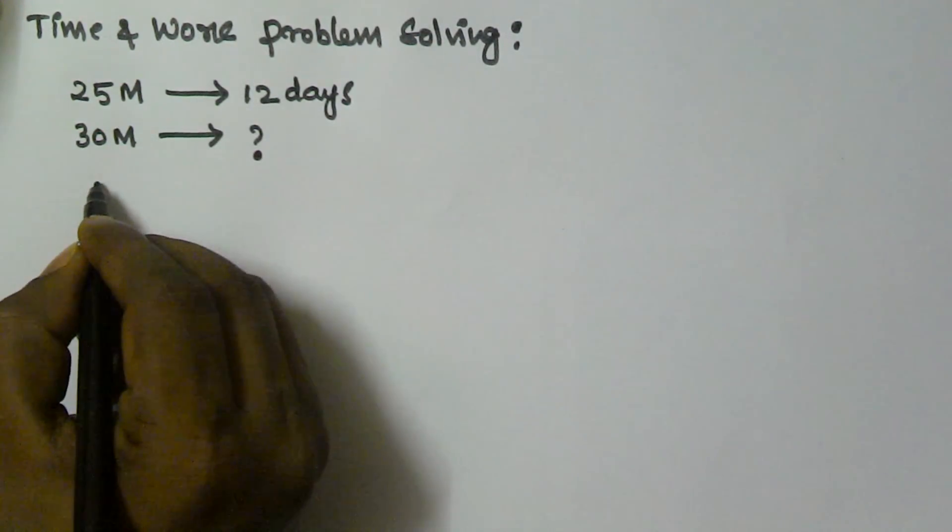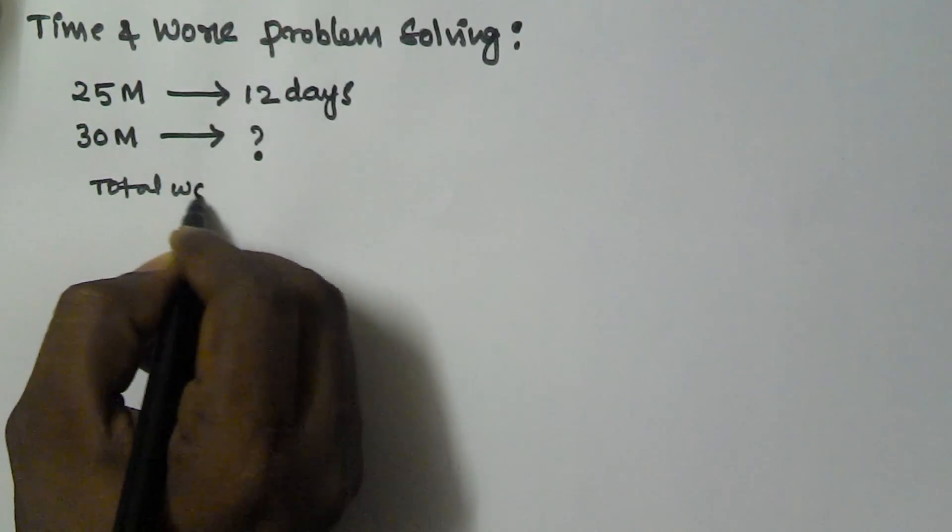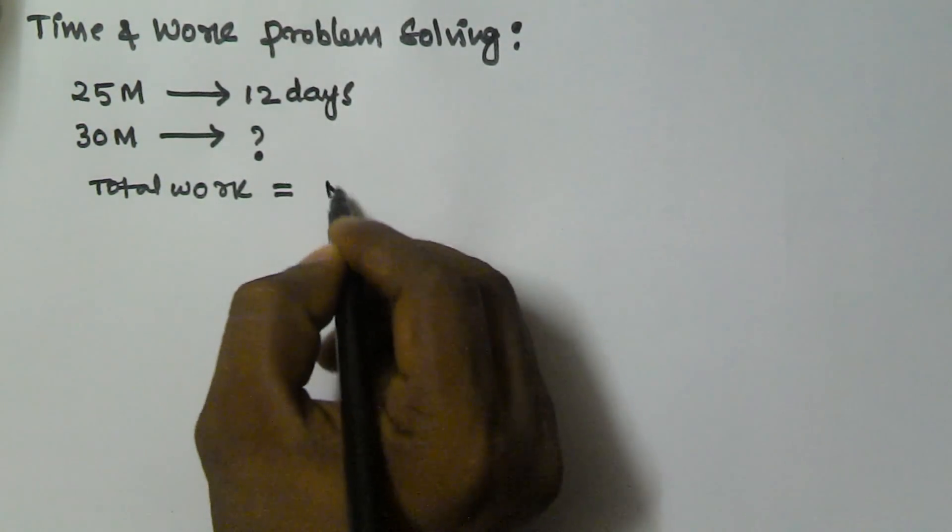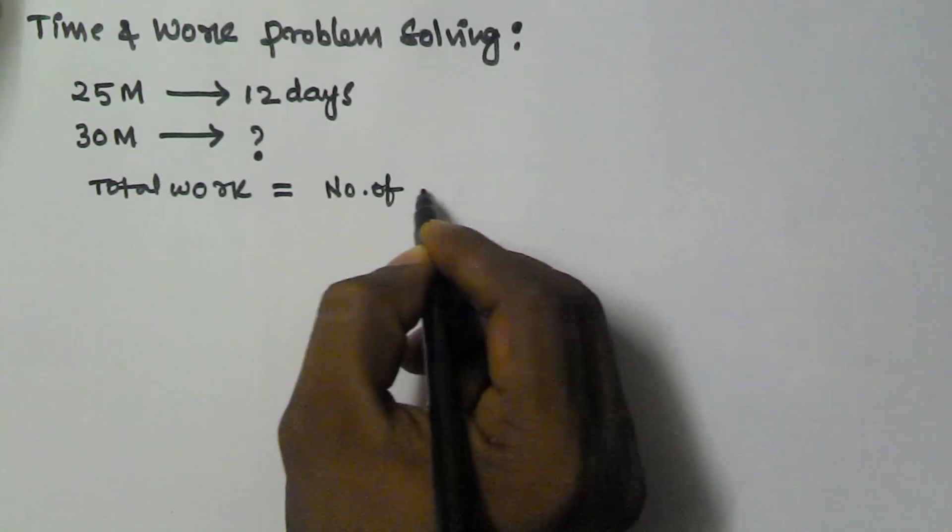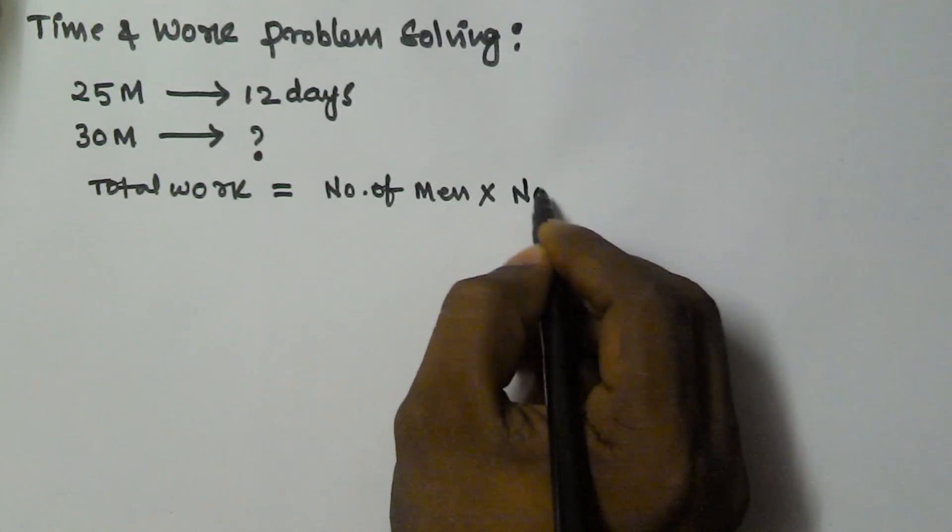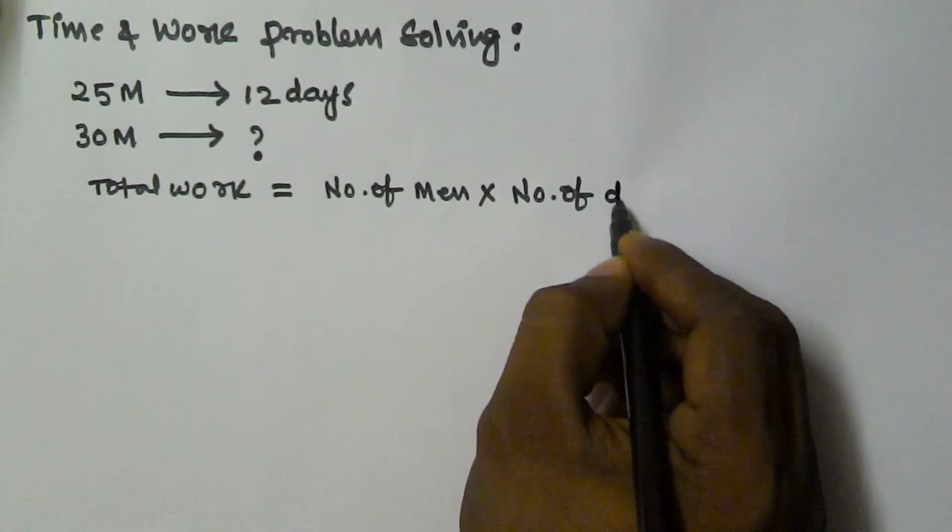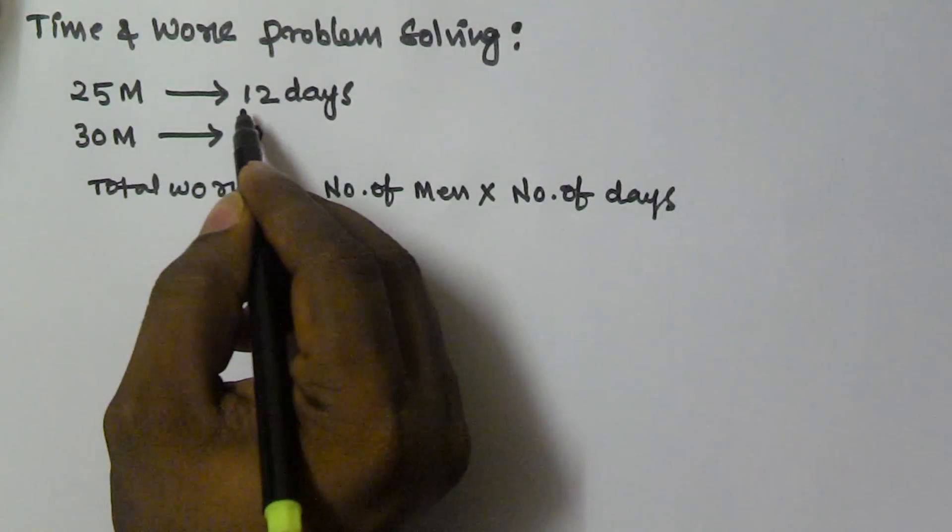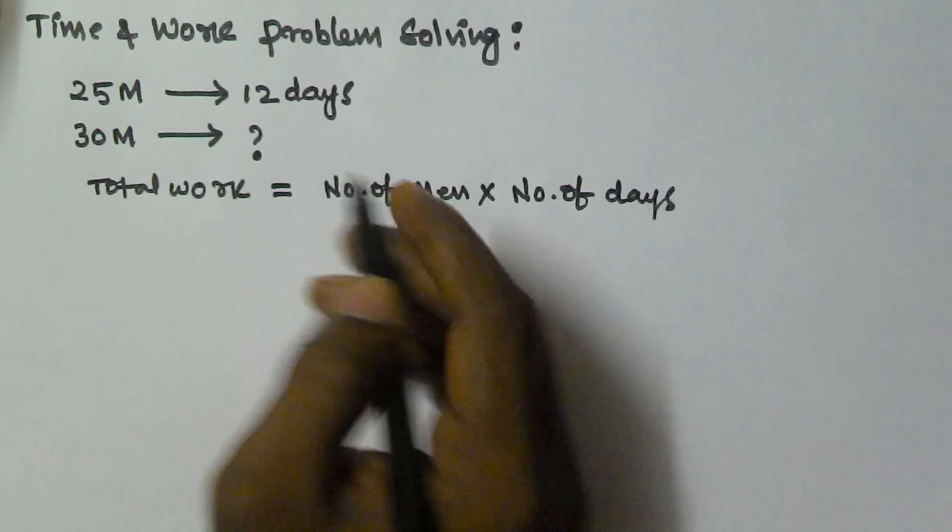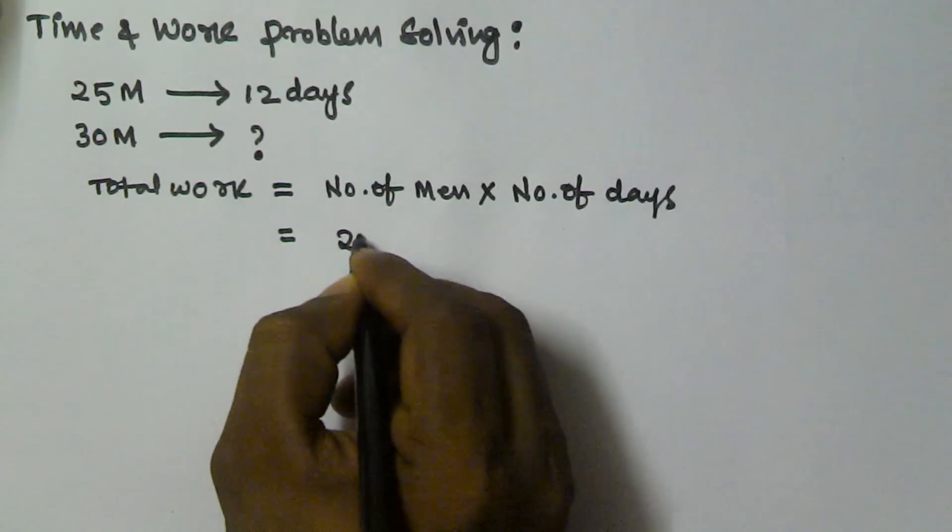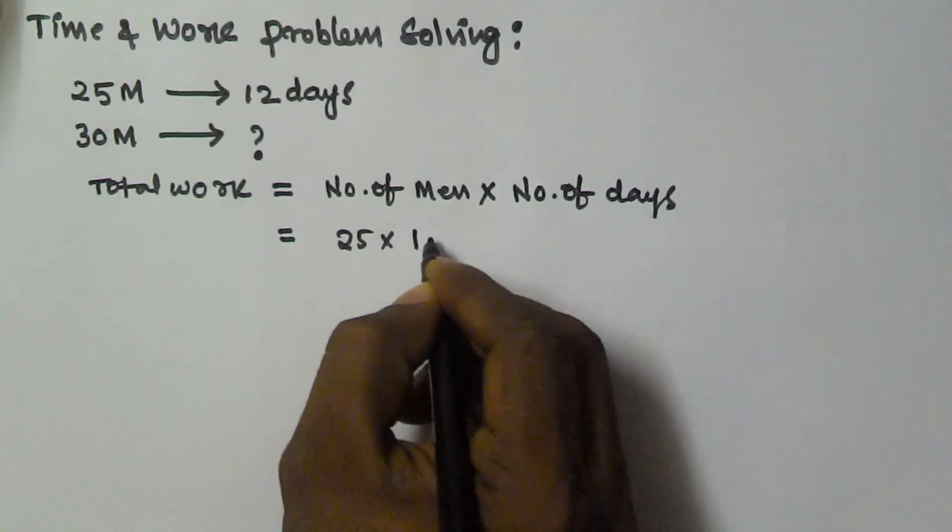The total work equals the number of men times the number of days. In the first case, 25 men will work for 12 days to finish the work. So the total work equals 25 times 12.